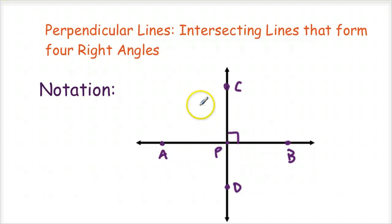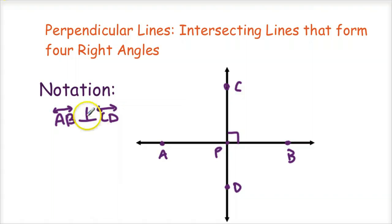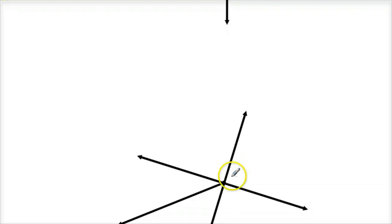We can do some other examples with this. Just know that these are 90 degrees — that's the definition of perpendicular lines. If you want to use the notation, you would say line AB is perpendicular to line CD. That's how we would distinguish that AB is perpendicular to CD, and it's pretty easy to see when we have it in a diagram like that.